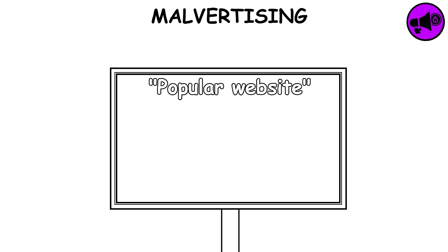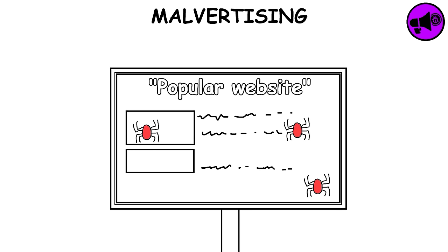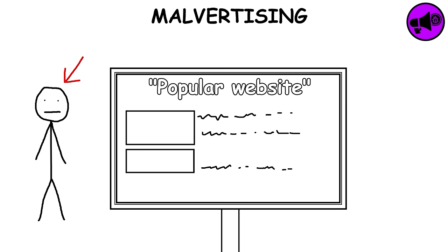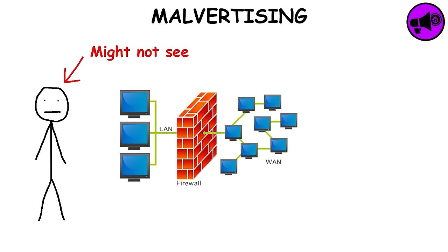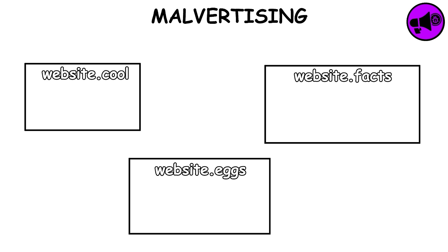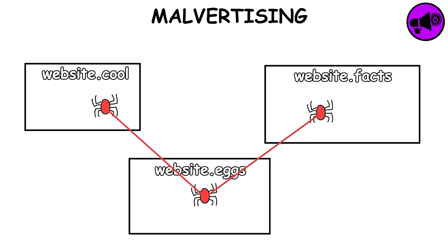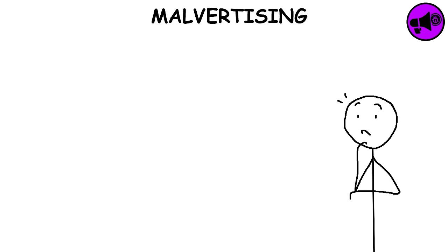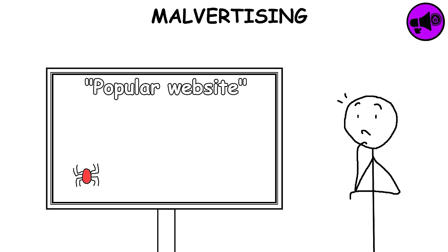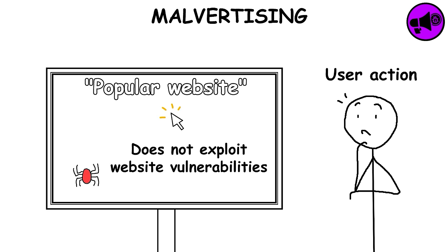Malvertising. It's the use of advertising on highly reputable websites to spread malware. This is done to push attacks to web users who might not otherwise see the ads, due to firewalls or other safety precautions. It can be easily spread across a large number of legitimate websites without directly compromising those websites. The interesting thing about infections delivered through malvertising is that they do not require any user action, like clicking, to compromise the computer, and do not exploit any vulnerabilities on the website.